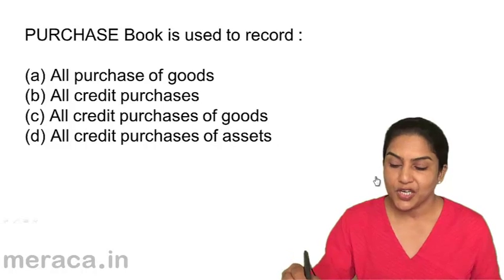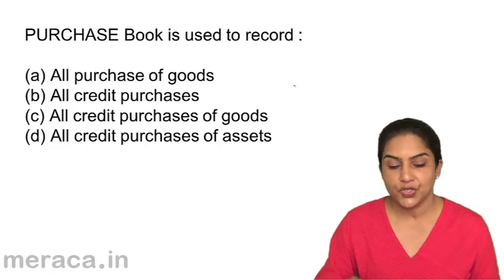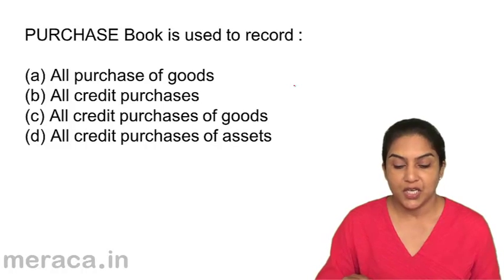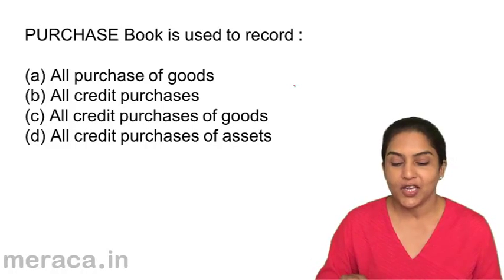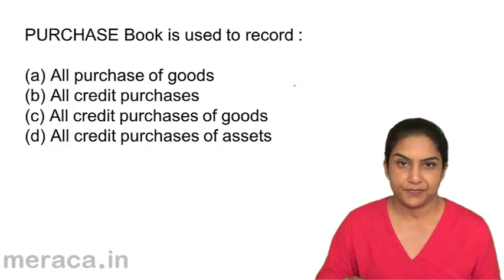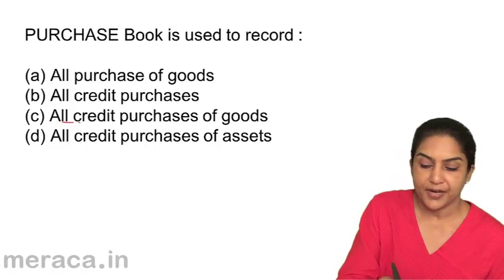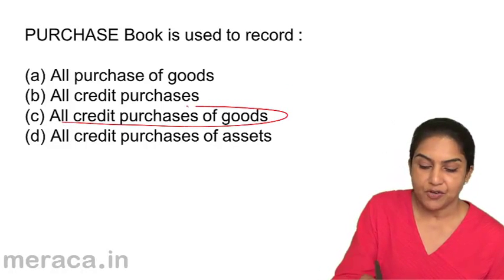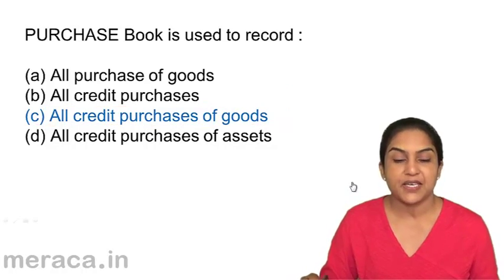Purchase book is used to record: a) all purchases of goods, b) all credit purchases, c) all credit purchases of goods, or d) all credit purchases of assets. Purchase book is used to record all credit purchases of goods. Correct answer should be c.